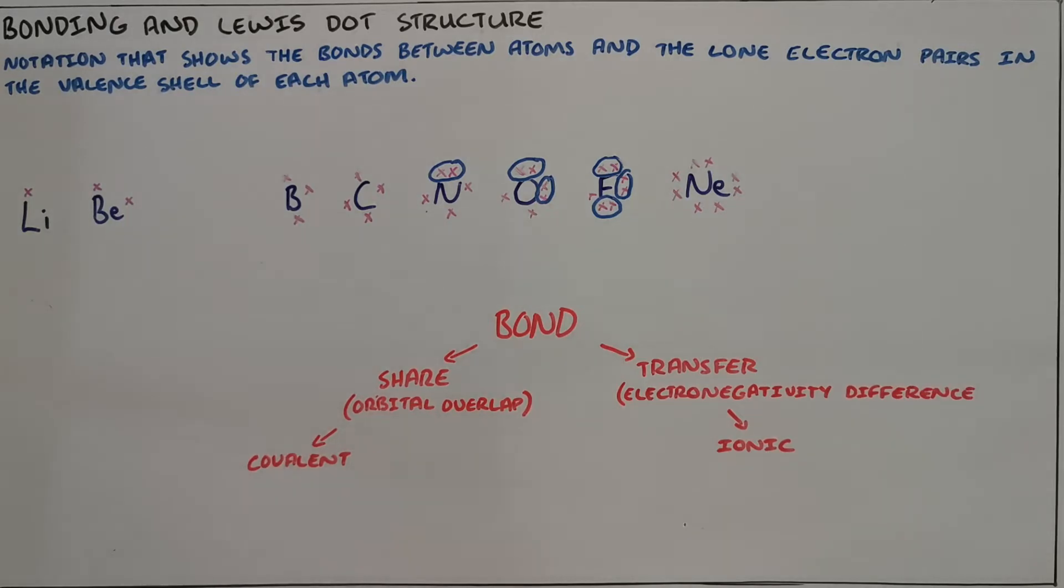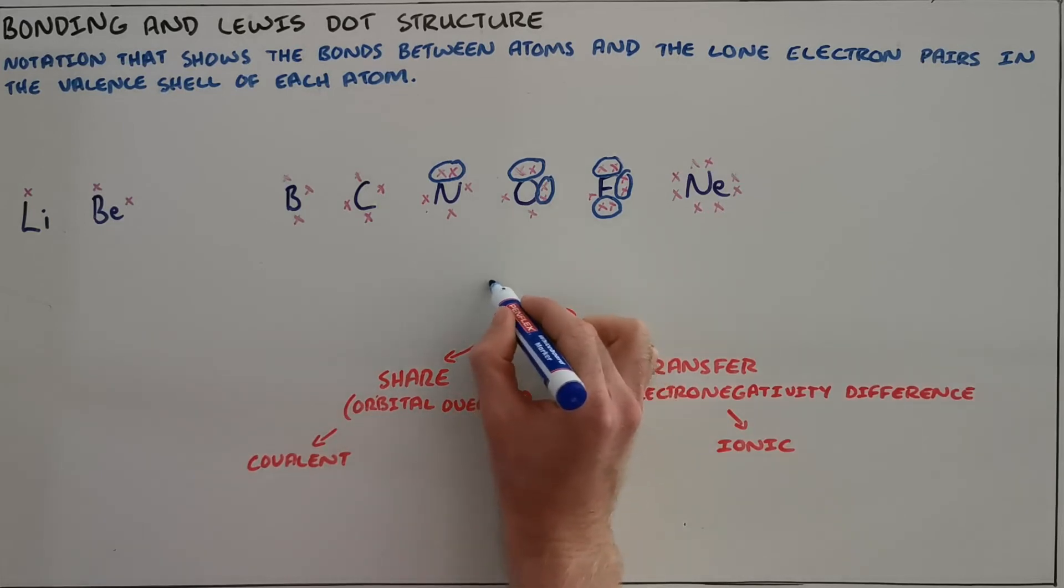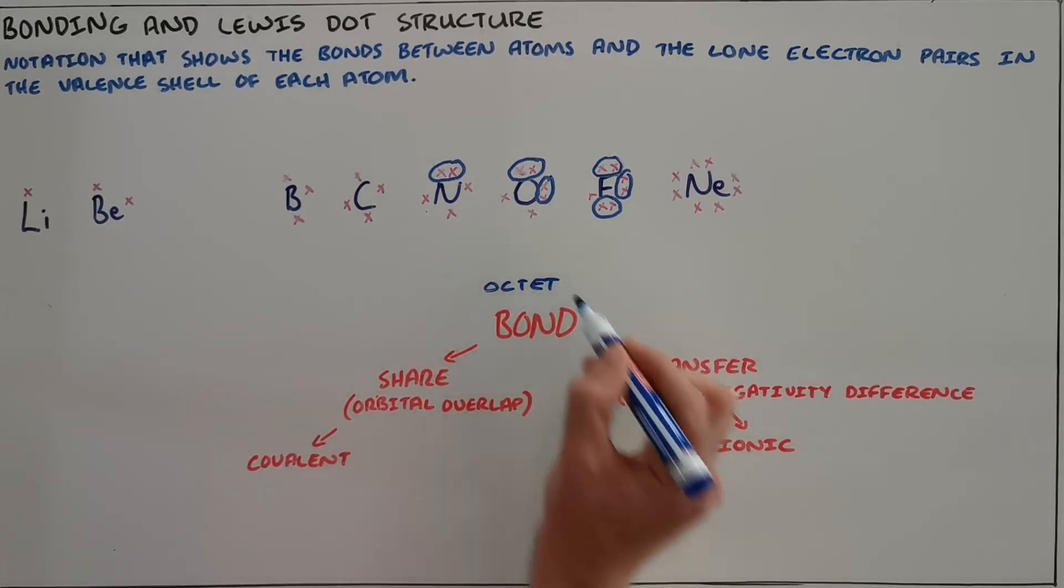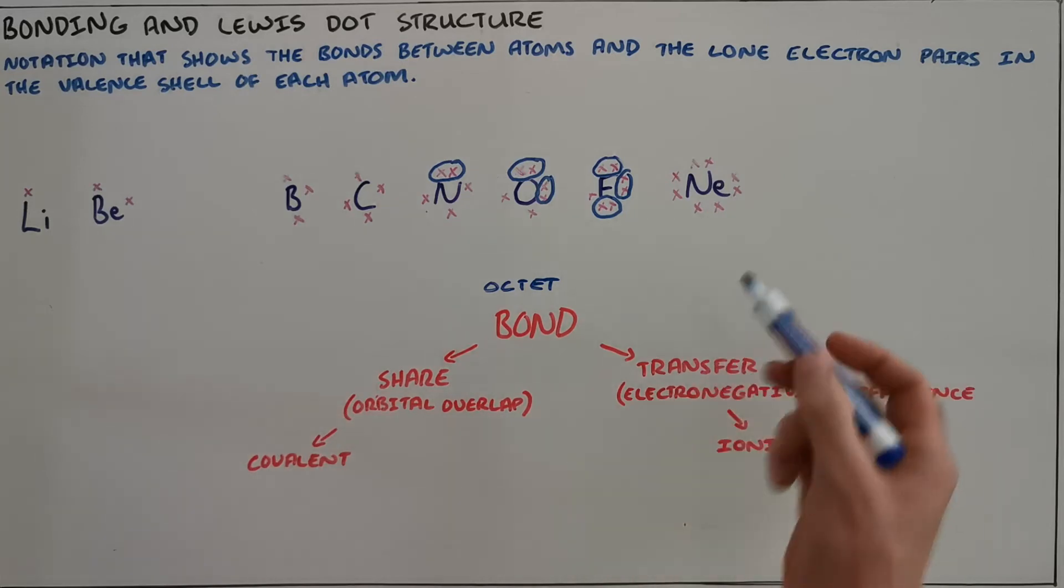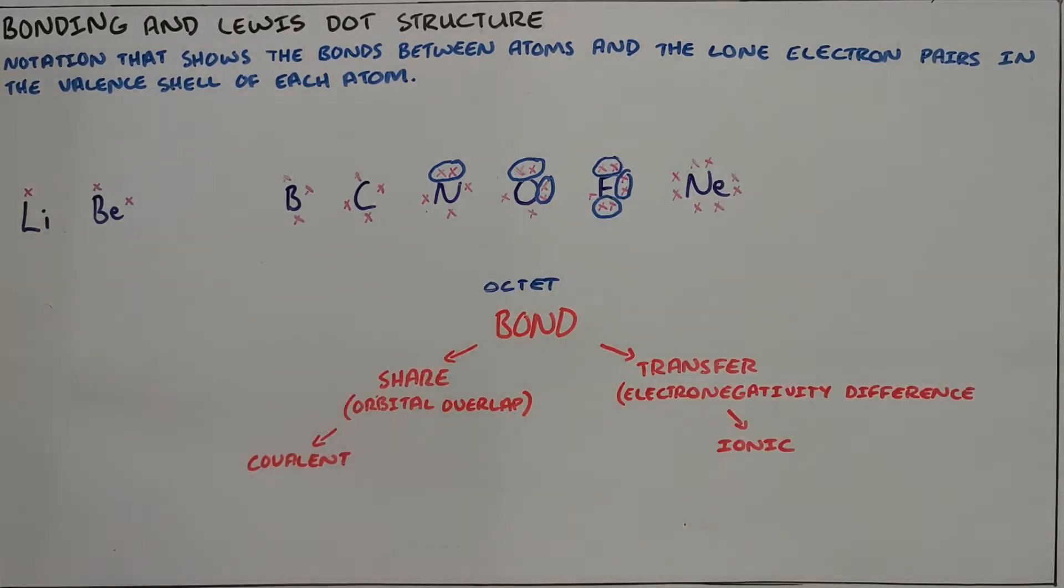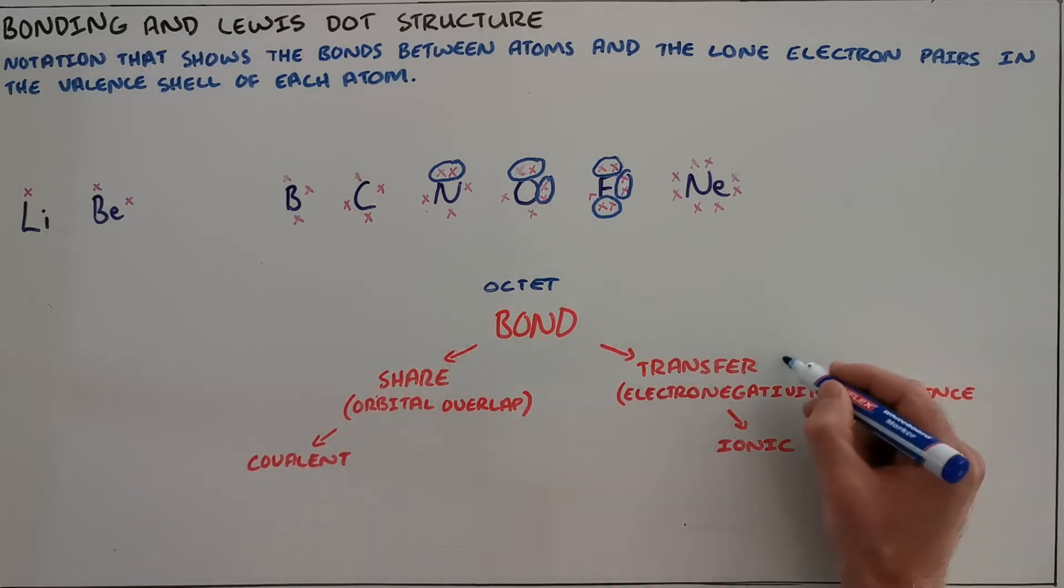The reason why this is important, that we can draw a Lewis structure, is because now we can see why a bond would form or where bonds would possibly form. We know that all bonds form because an atom wants to achieve greater stability, and it does that by following something called the octet rule. The octet rule tells us that the goal for each of these atoms is to obtain eight valence electrons. It can either do that by sharing electrons with neighboring atoms or it can do that by transferring, either gaining or losing electrons.